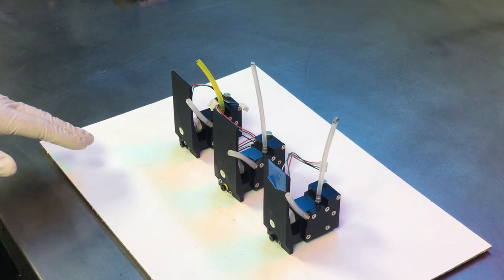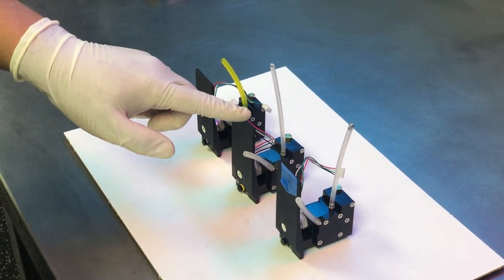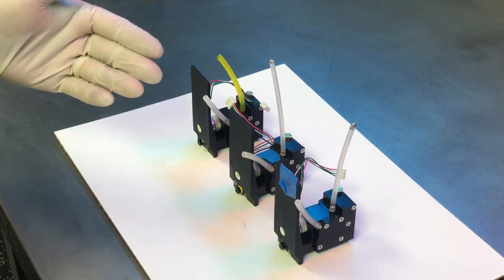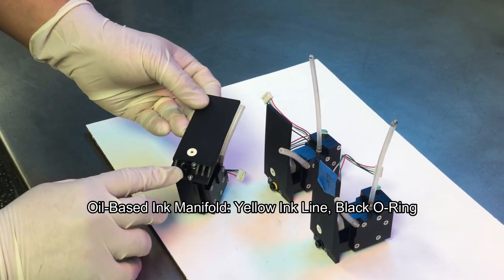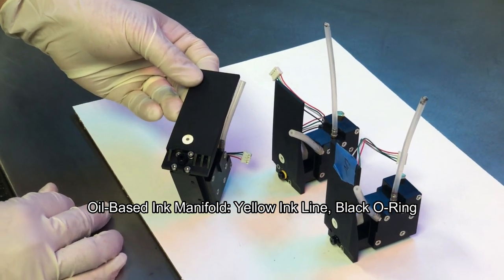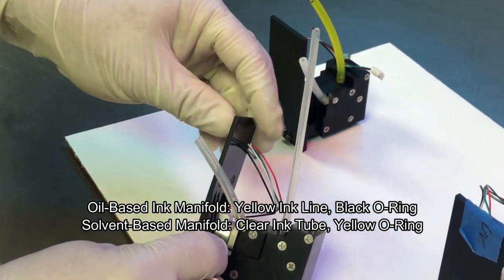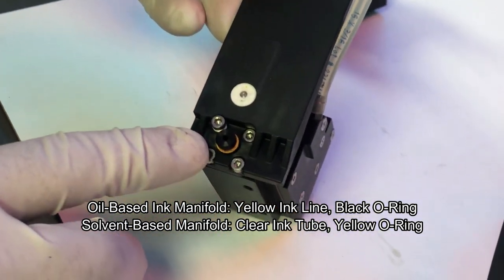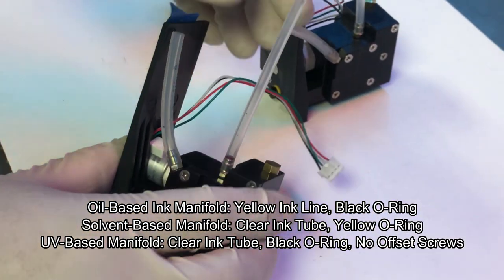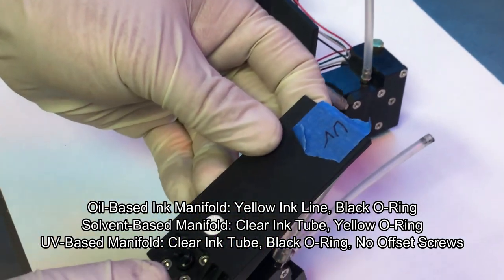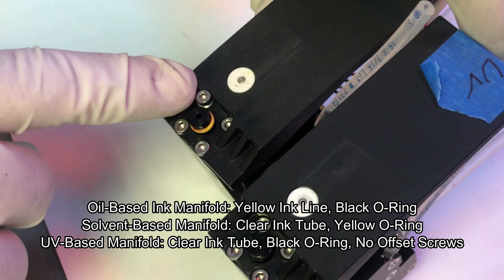When you're doing an ink manifold replacement, it's important to understand which ink you are actually replacing: oil, solvent, or UV. Some of the differences are visible. With oil, you'll see a greenish-yellowish ink line and black O-ring. With solvent, you'll see a clear but more rigid ink line and a yellow O-ring. With our UV, you'll see the same ink line as the solvent, but a black O-ring and a noticeable lack of offset screws, as can be seen in solvent and oil.